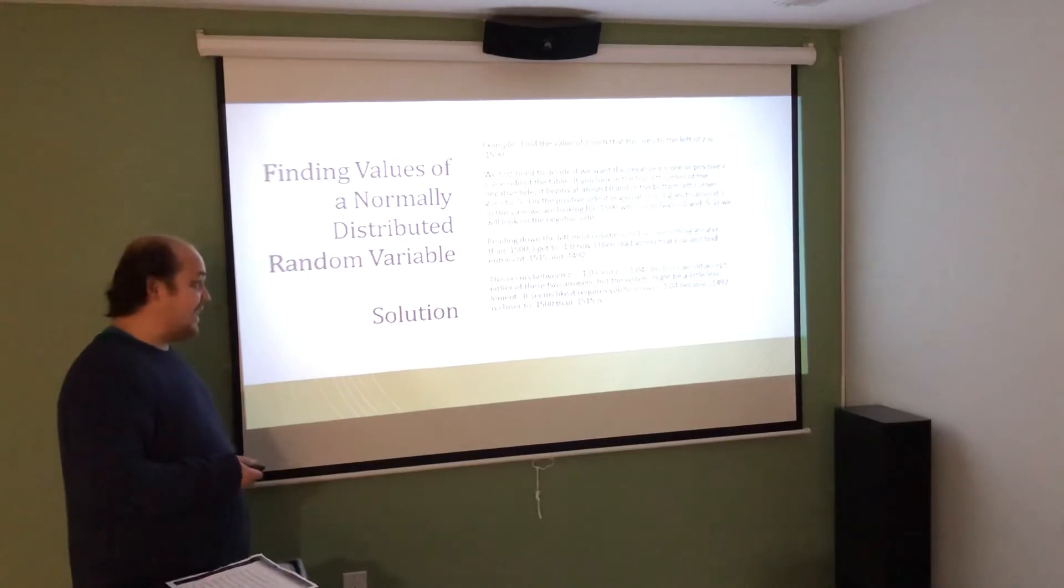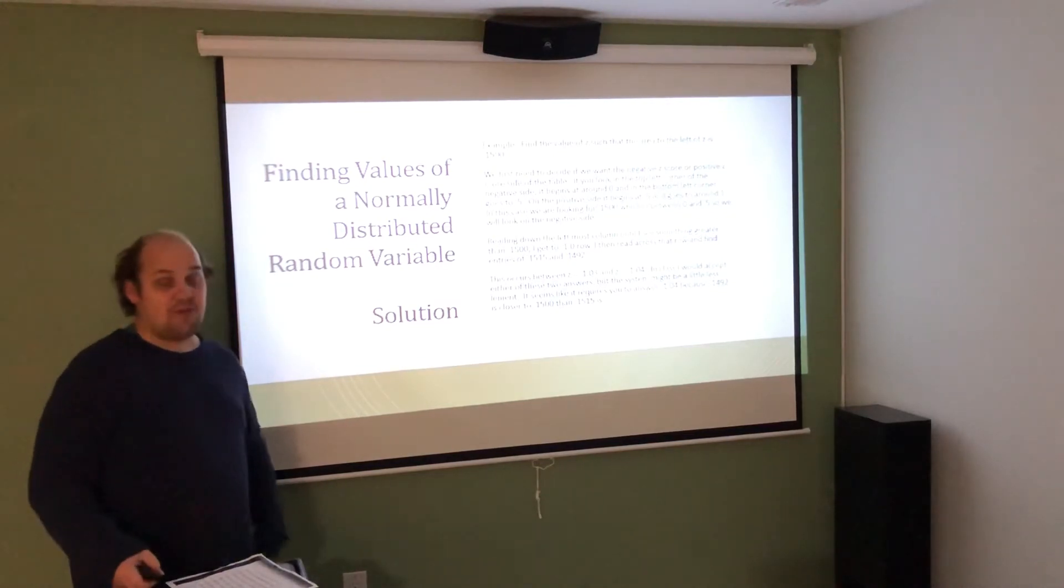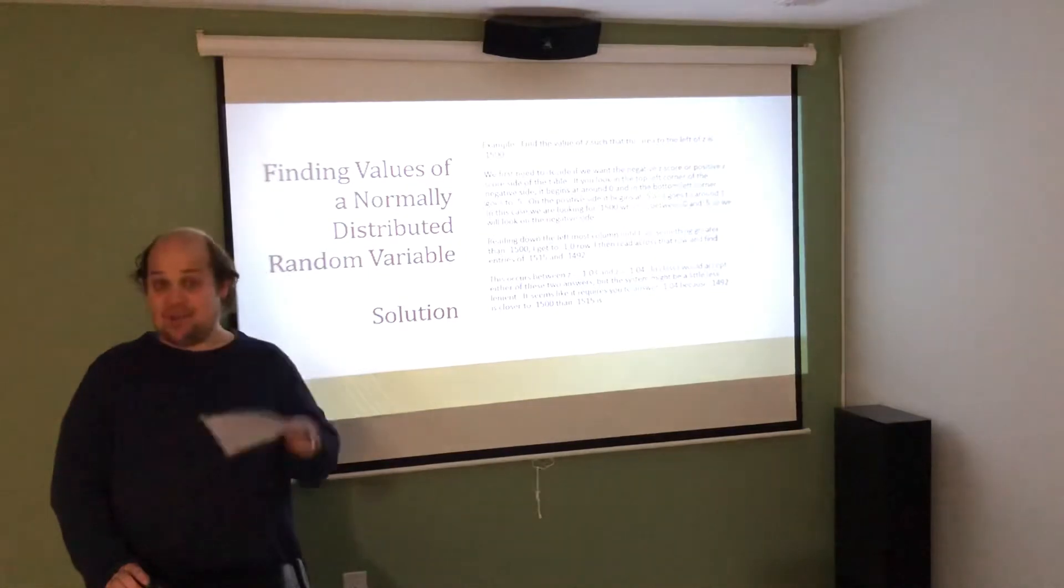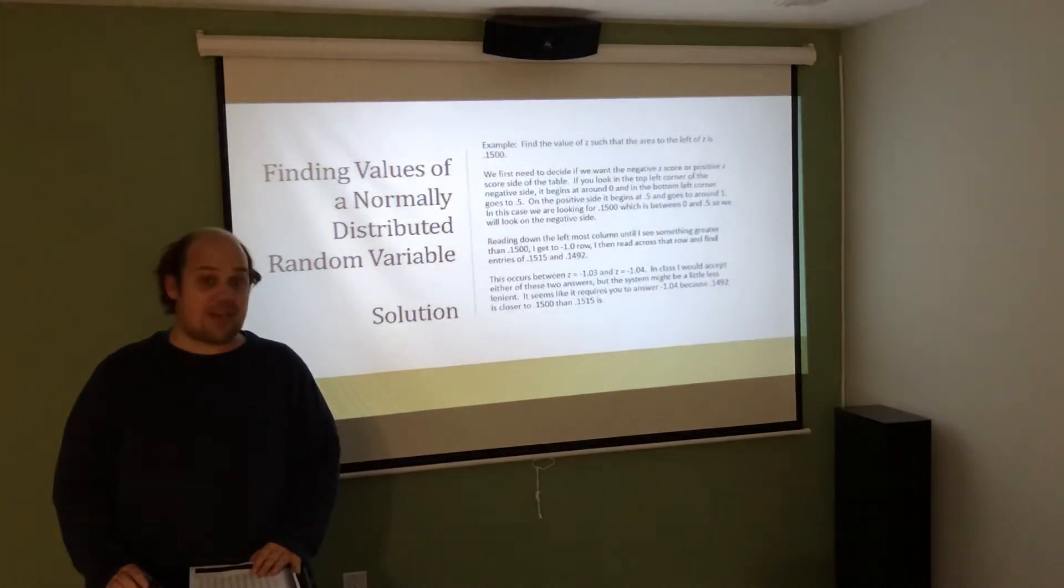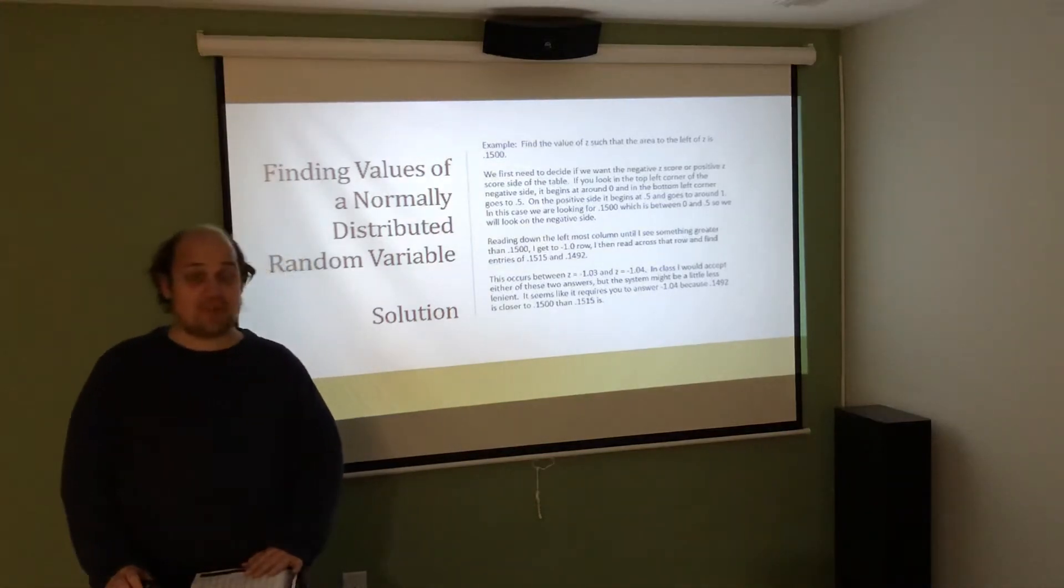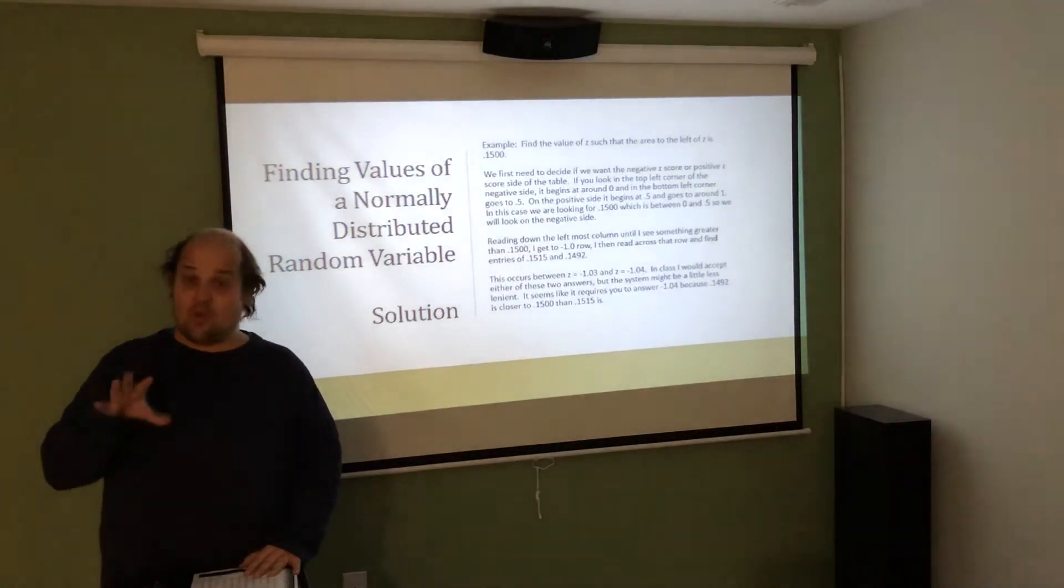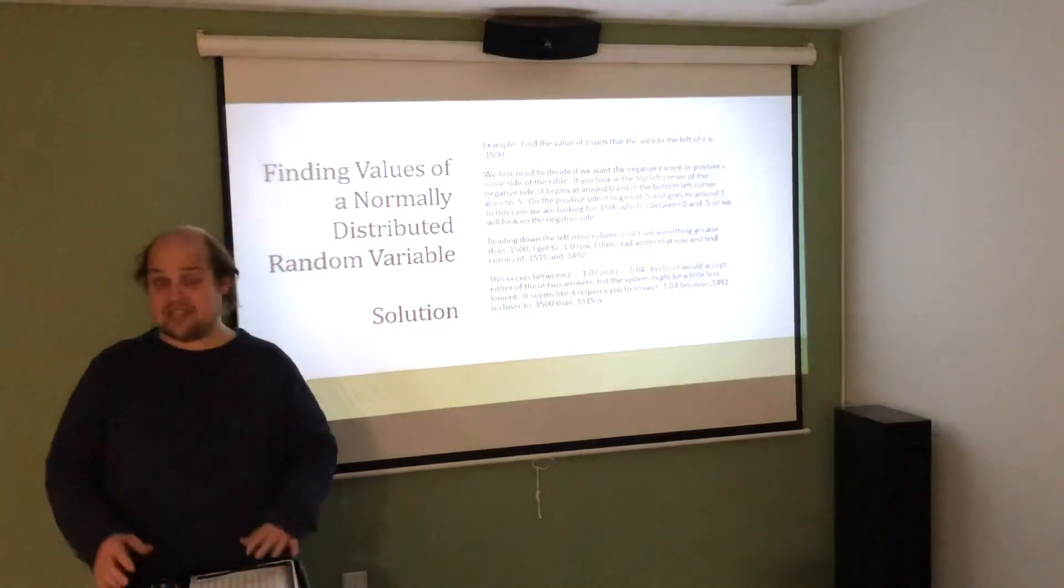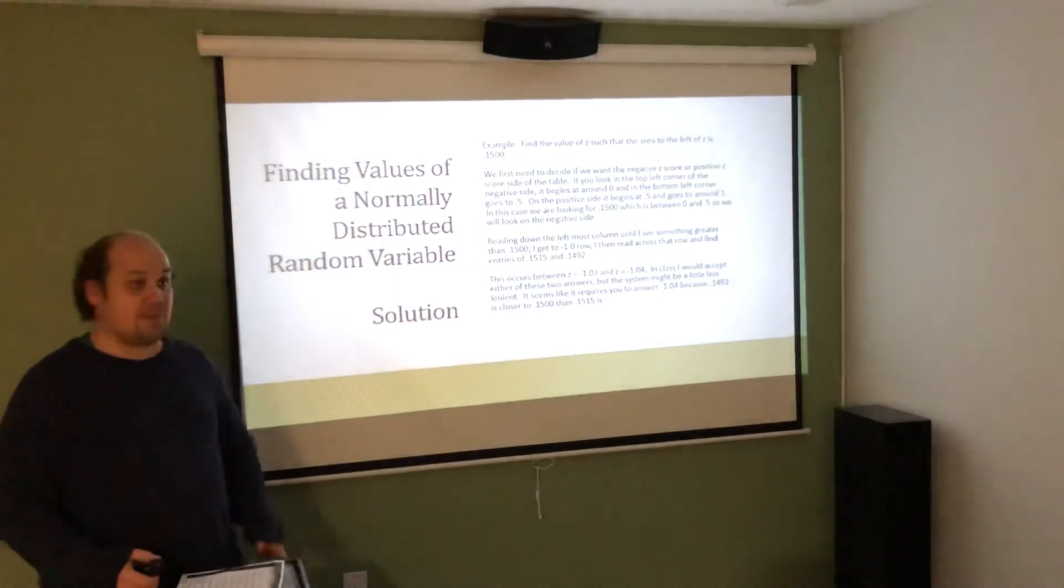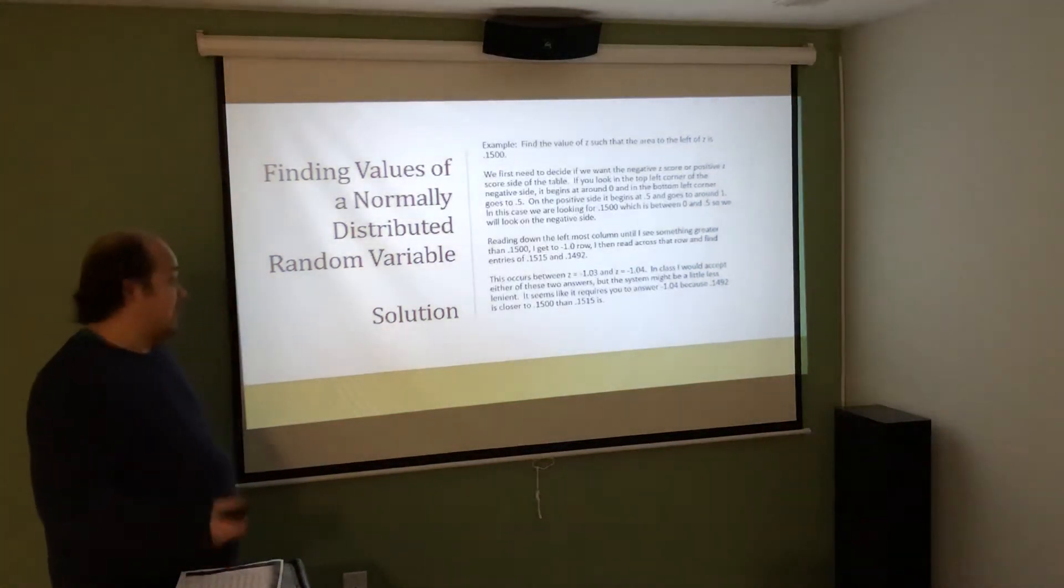The system might be a little less lenient. It looks like it requires you to answer negative 1.04 because 0.1492 is closer than 0.1501. Really, I want to warn you that the system thinks you're using a calculator that is somewhat more accurate than this table. I don't teach it in this class from a calculator because I don't require the calculator that has it. And I don't want everybody to have to pay $120 to have that calculator for this class. So I'm really using the table as somewhat of a workaround. There may be times where that means your table is not as accurate as what they want in the system. When that happens, send it to me as an asking teacher. I can replace it and show what you actually wanted to put into the system, but it will not end up getting you points off. It's just something that you need to be aware of. Sometimes what's written in the table won't be the exact answer that I'm looking for.